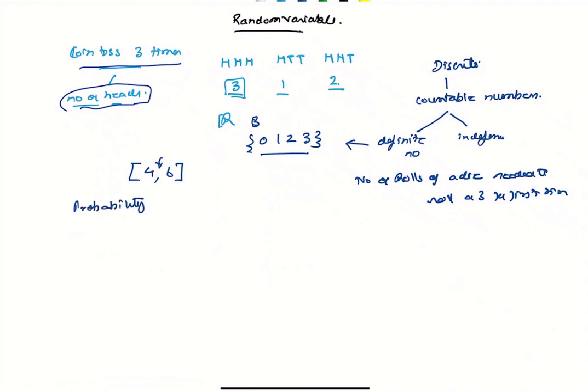There can be a discrete probability distribution and a continuous probability distribution. A probability distribution is a list of all the possible values of the random variable X and the probabilities of each value occurring.